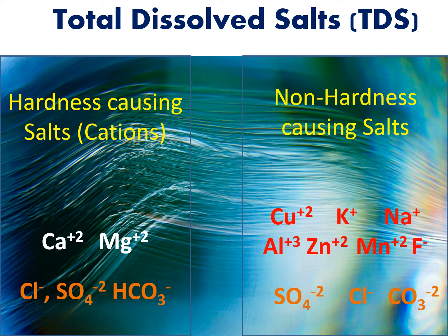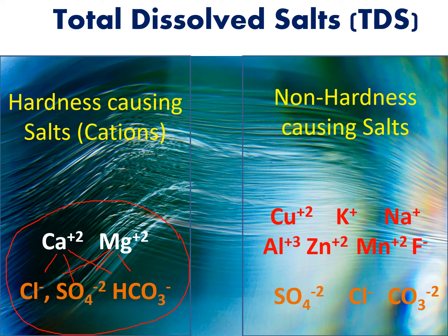Water can contain different types of salts — all called total dissolved salts, or TDS. These include calcium salts, magnesium salts, copper, potassium, sodium, aluminum, and zinc salts. But the hardness-causing salts are only calcium and magnesium salts — specifically calcium chloride, calcium sulfate, calcium bicarbonate, magnesium chloride, magnesium sulfate, and magnesium bicarbonate. Other salts like copper, potassium, sodium, and aluminum are non-hardness-causing salts. All together they are called total dissolved salts.